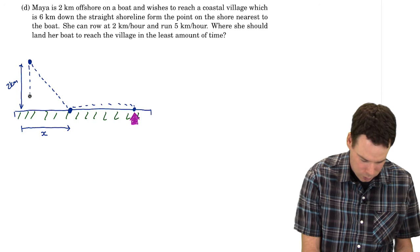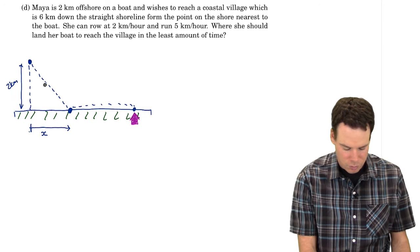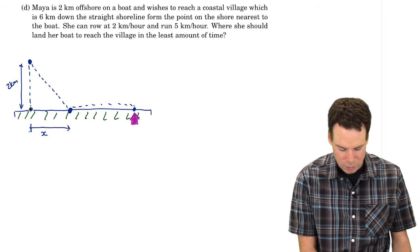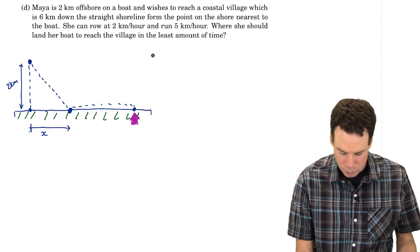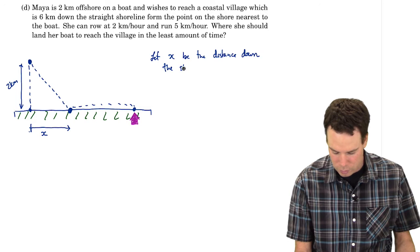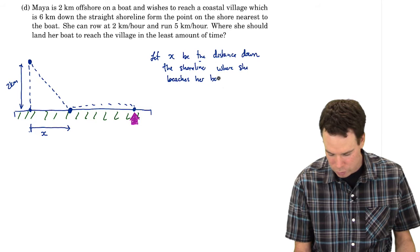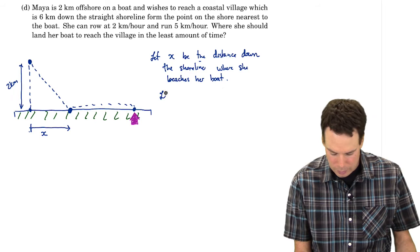So actually I should have indicate that. Measuring it from that point right there. So she can either ride straight there. Perpendicular line straight to the shore and then run or she could do anything in between. Beach the boat at any point between this spot and going straight to the village. So we're going to let x be the distance down the shoreline where she beaches her boat.